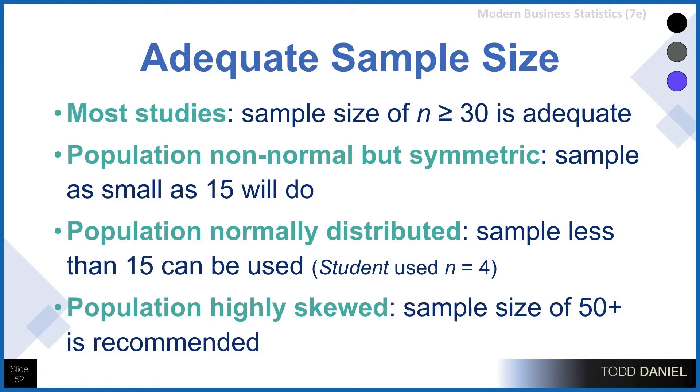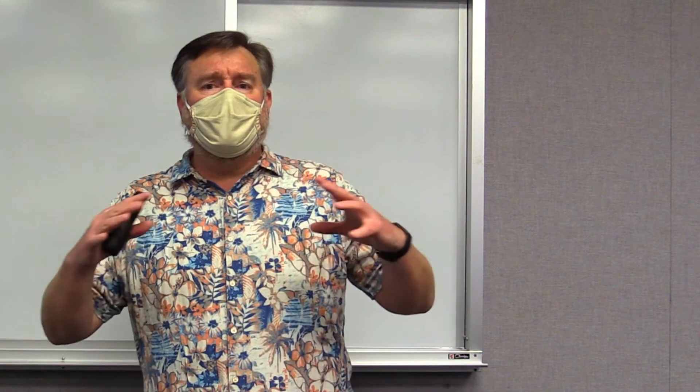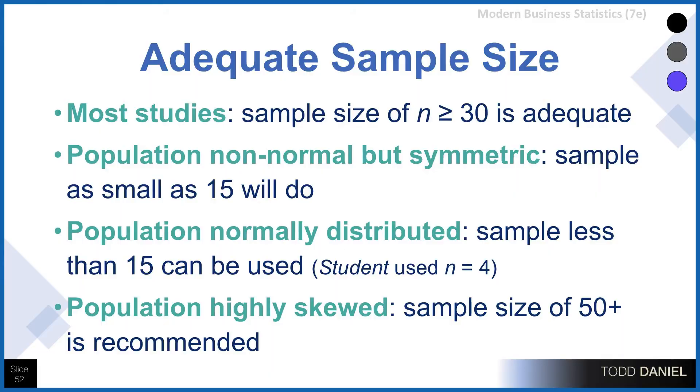If you have a population that is non-normal, not normally distributed, but it is symmetric, so it's really a matter of having more or less kurtosis in your population, then a sample as small as 15 will do.